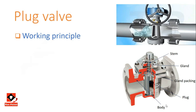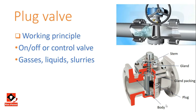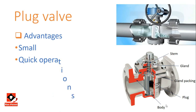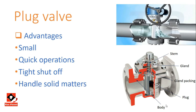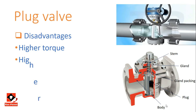Plug valve working principle: it has a plug connected to a rotating stem. It can be used as an on/off and control valve while handling gases, liquids, and slurries. Advantages: the plug valve is smaller in size, allowing quick operation, has good shut-off capability, and can deal with fluids containing solid matter. Disadvantages: if operated quickly it requires higher torque, and the cost of the plug valve is higher.